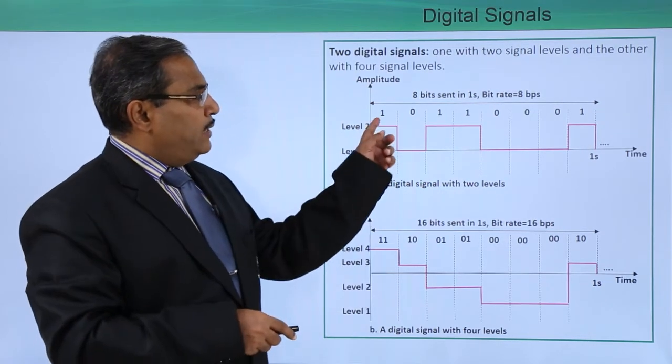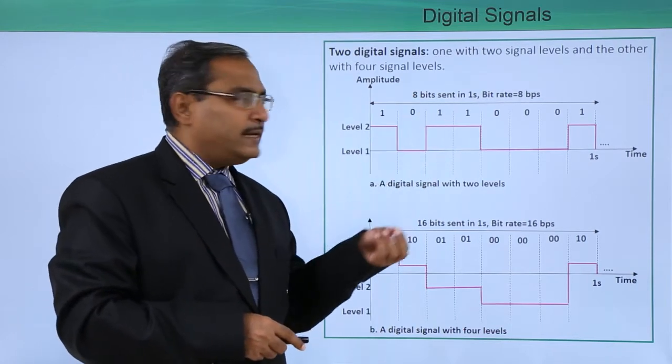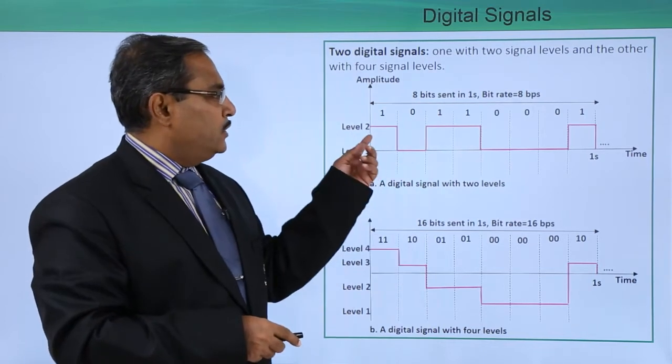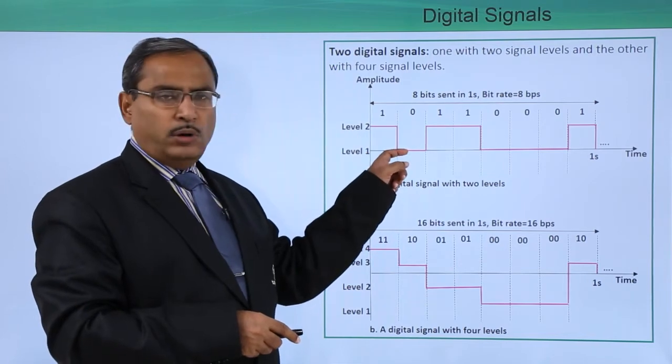Here we are having 8 bits. 8 bits sent in one second means the bit rate will be 8 BPS. This 1 will be denoted by the high level and 0 will be denoted by the low level.